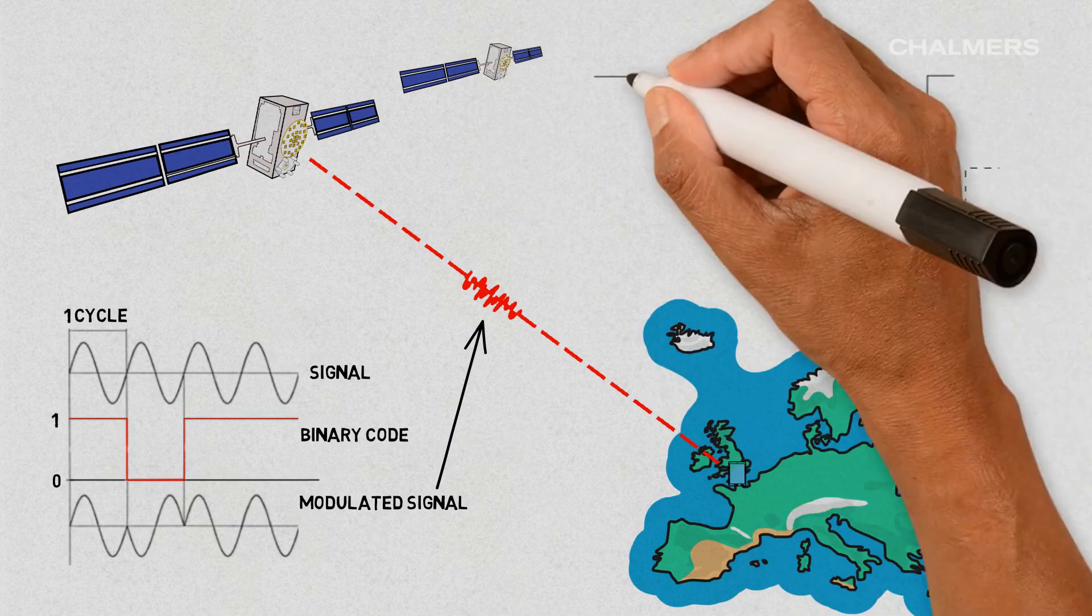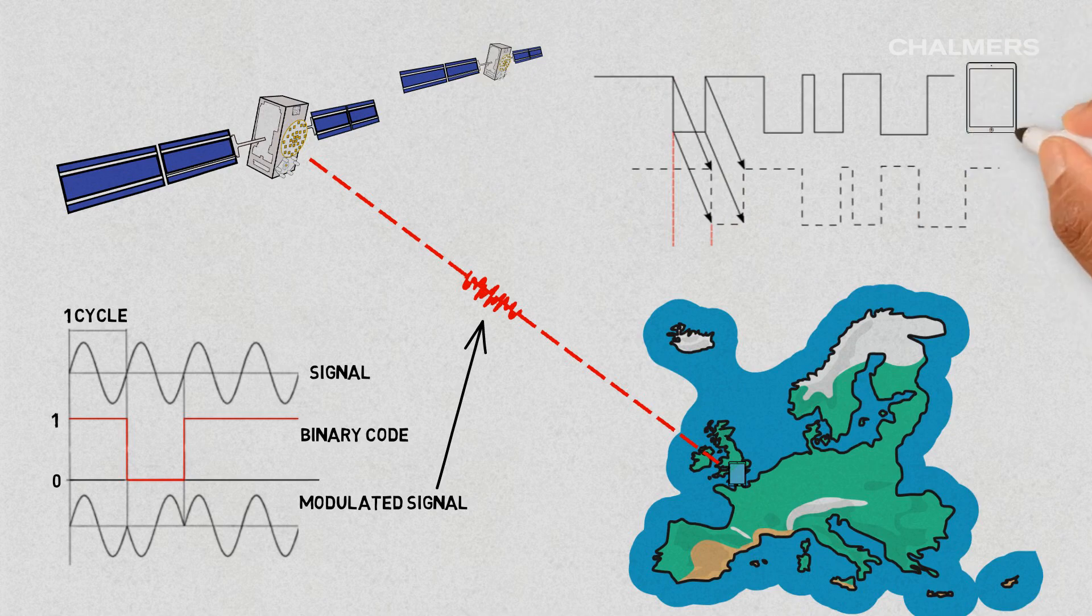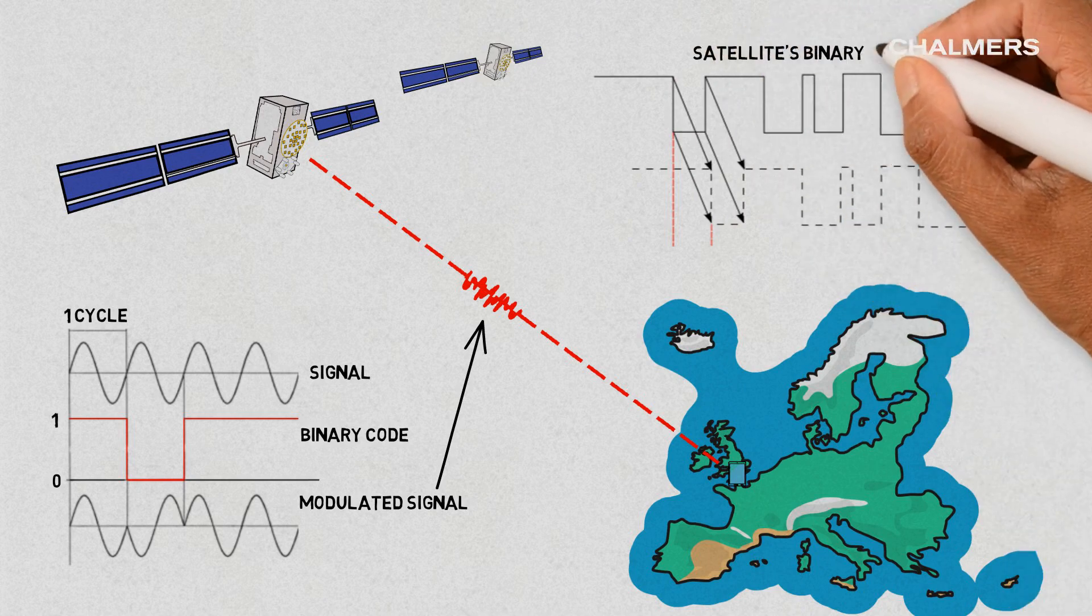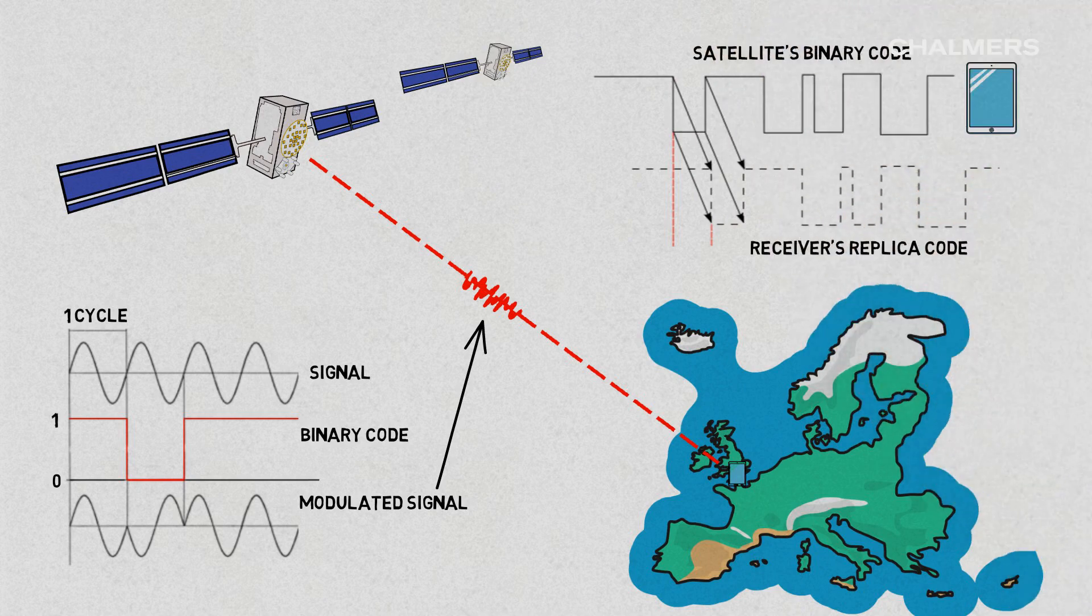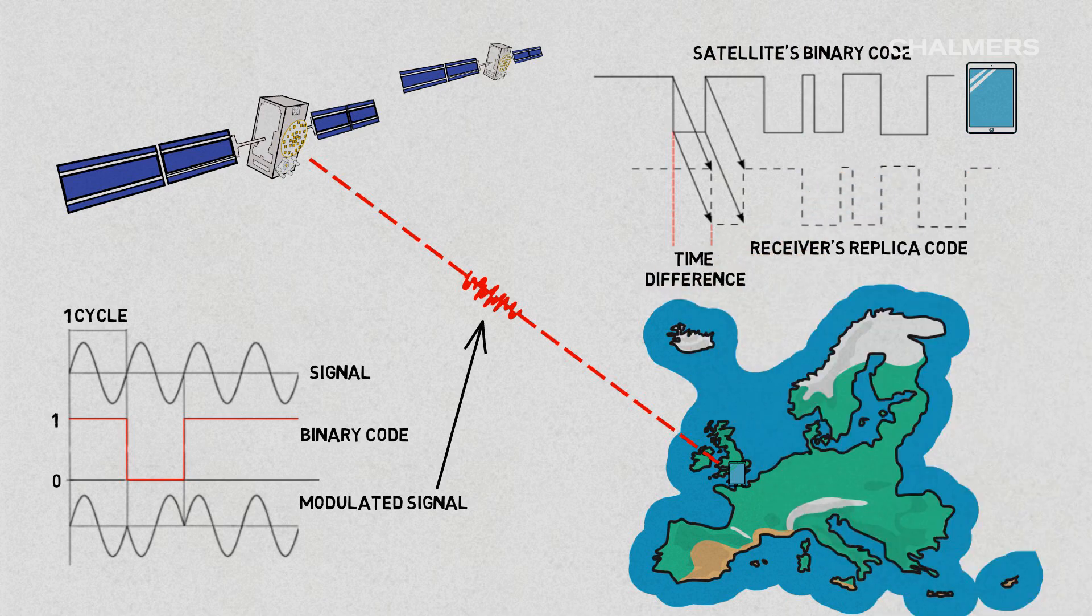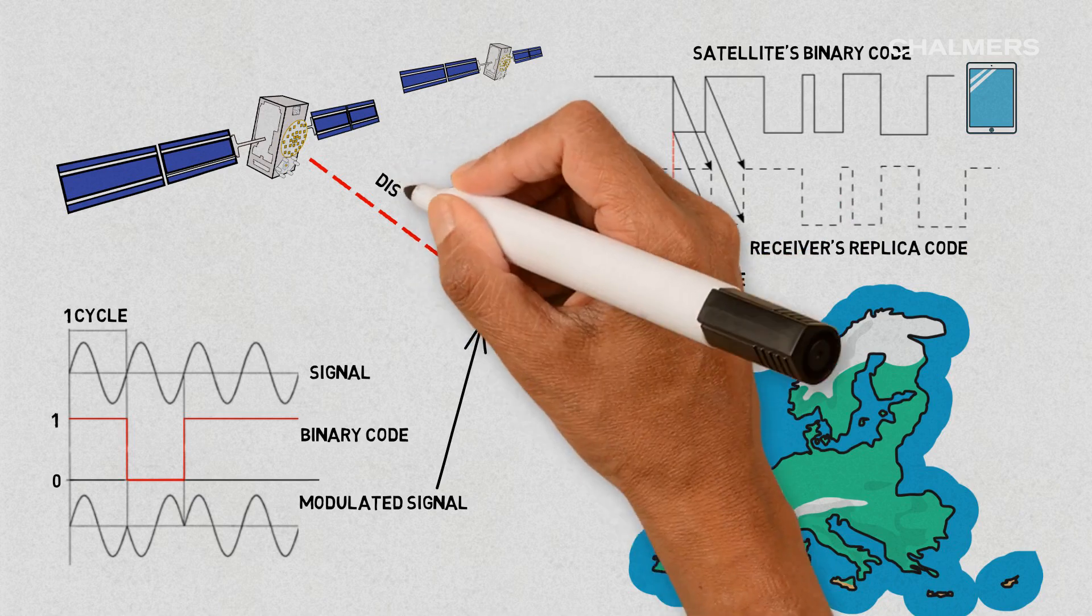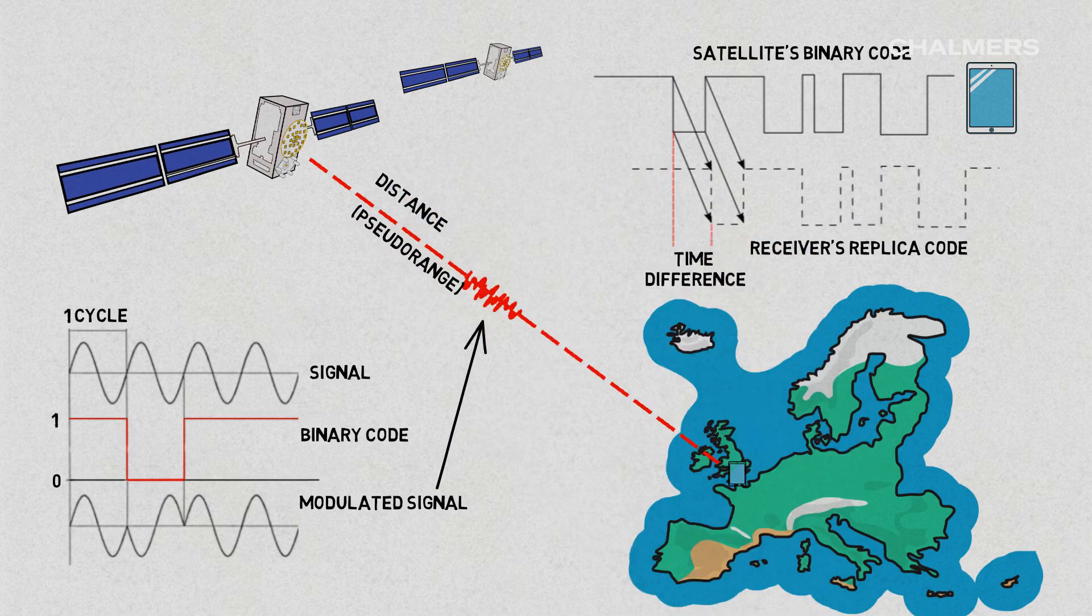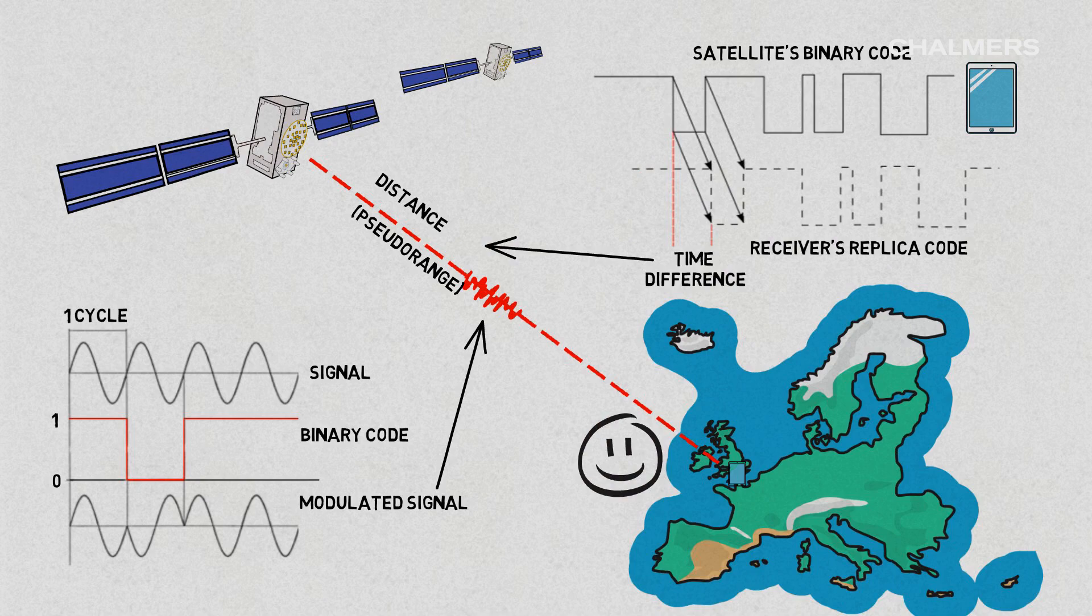Each satellite has its own unique binary code. The satellite receiver distance is determined in your mobile phone by comparing the received binary code with the internally generated replica of that code. In this way, one can derive the time that it takes the satellite signal to reach the receiver. This quantity can be then easily converted to a distance, called pseudorange, and utilized to localize your mobile phone with respect to the satellite which the signal was sent from.